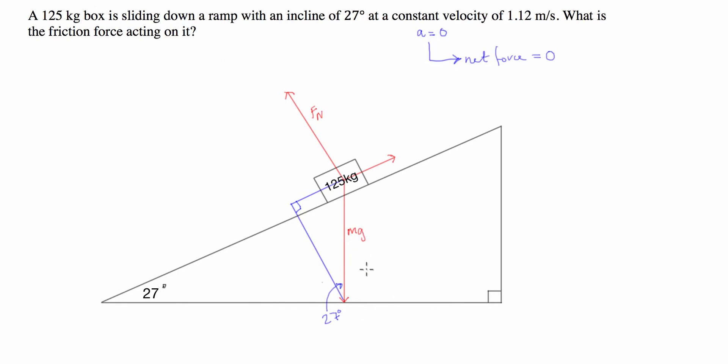And what we're going to do is, first of all, work out what mg is. So mass times gravity, which is going to be equal to 125 times 9.81.